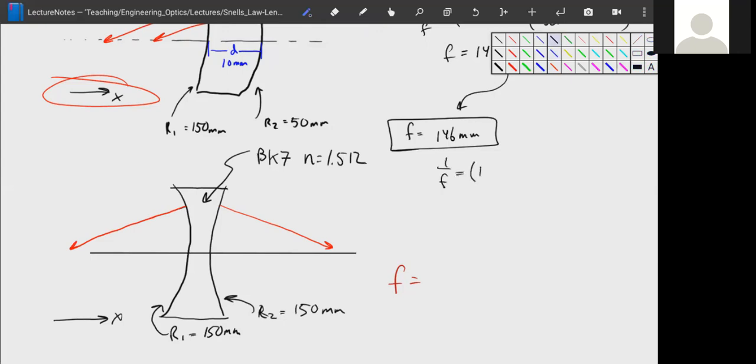So that means when we write our equation, 1/f = (n-1)(1/R₁ - 1/R₂), one of these R's is going to be positive and one's going to be negative. n-1 is BK7, so it's 1.512 minus 1, times 1/-150 millimeters minus 1/+150 millimeters. And when we toss that into our calculator and solve it, we get a negative 146 millimeters.